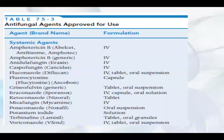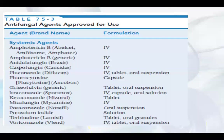The antifungal drugs available in different forms include: amphotericin B for intravenous use, caspofungin, fluconazole, flucytosine, griseofulvin, itraconazole, ketoconazole, micafungin, osaconazole, potassium iodide, terbinafine, and voriconazole. You can find various types of antifungal drugs in different dose forms.